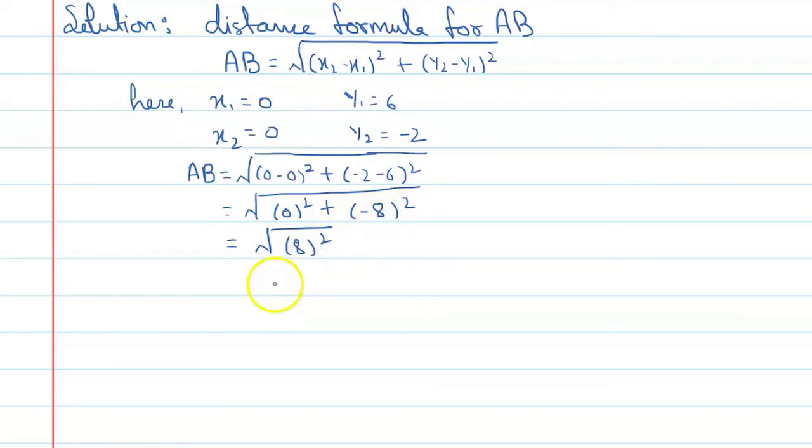So AB equals 8. We can write our final answer here. The distance between A and B is 8 units, and the correct option is B.